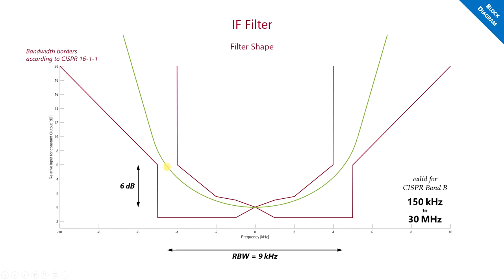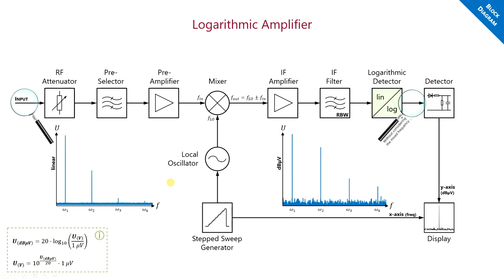Therefore, different producers of EMI receivers might have small differences in the filter shapes. By the way, when using spectrum analyzers, the resolution bandwidth is often defined as the distance after 3dB. After our signal is filtered, the signal is converted from linear to a logarithmic scale, as the y-axis of an EMI receiver is usually plotted in dB microvolt.